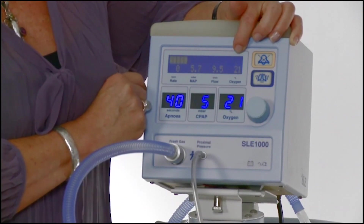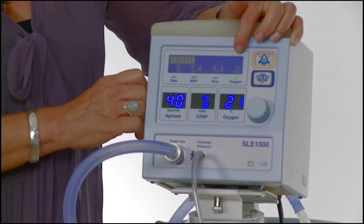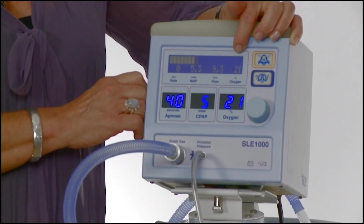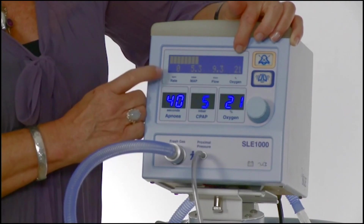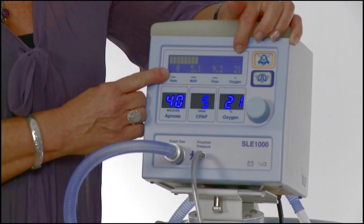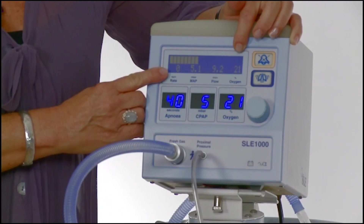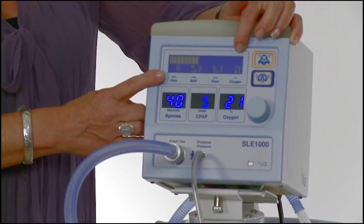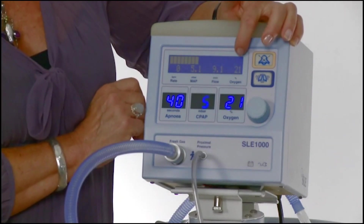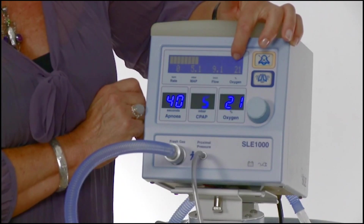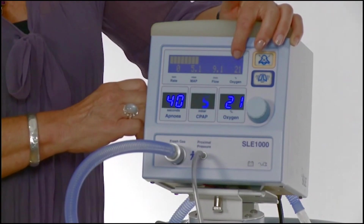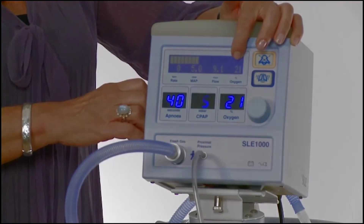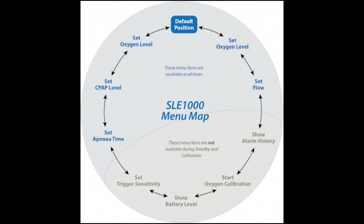This is a pressure trigger. If you see a low breath per minute rate displayed but you can see that the baby is making more effort, this could be an indication to increase the trigger sensitivity. The level of sensitivity shown in the top right-hand corner will be replaced by a flashing star indicating triggered breaths.